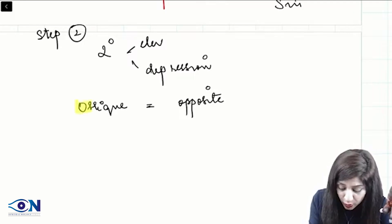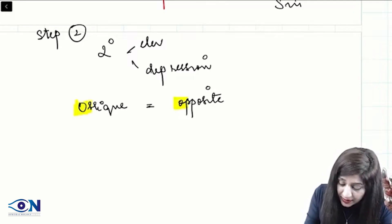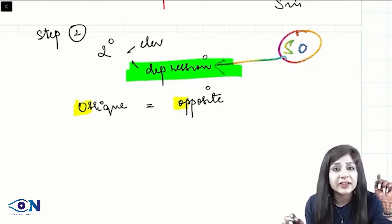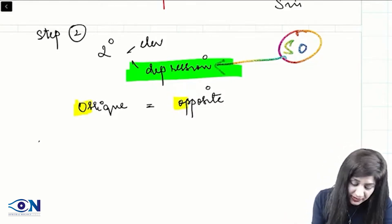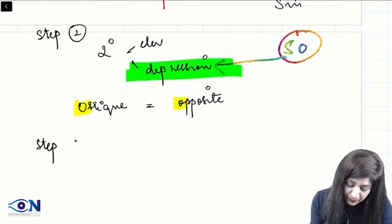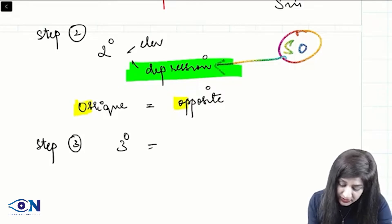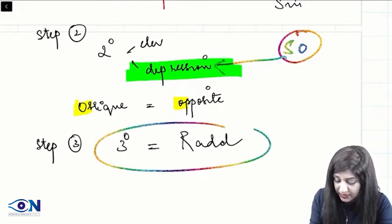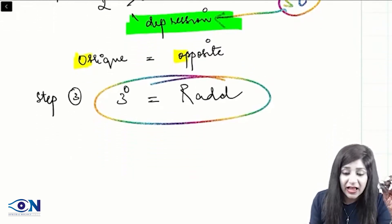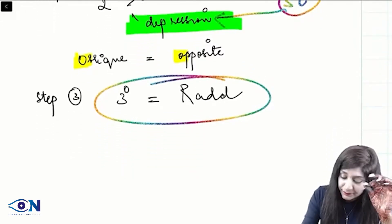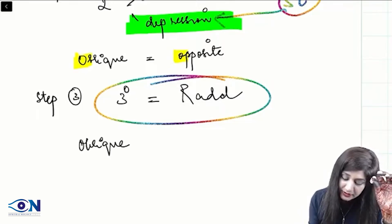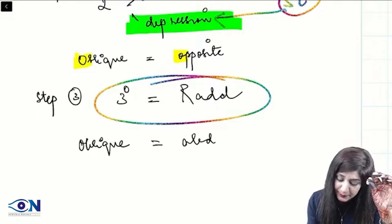Oblique muscles always go in the opposite direction. Our muscle is superior oblique — therefore it will cause depression. So in this way we have got the secondary action. Finally, step number 3: the tertiary action uses the mnemonic RAT — Recti Are adducTors. Recti muscles are adductors; therefore, for an oblique muscle, the tertiary action will be abduction.